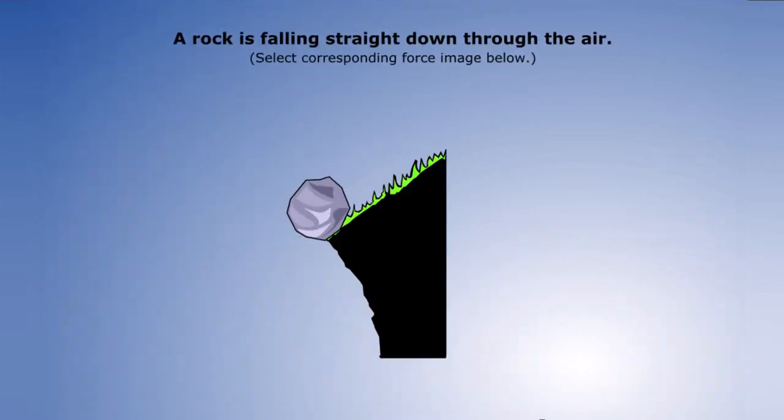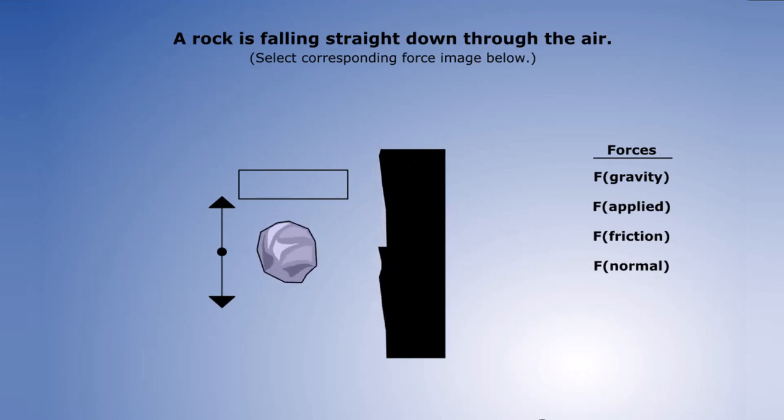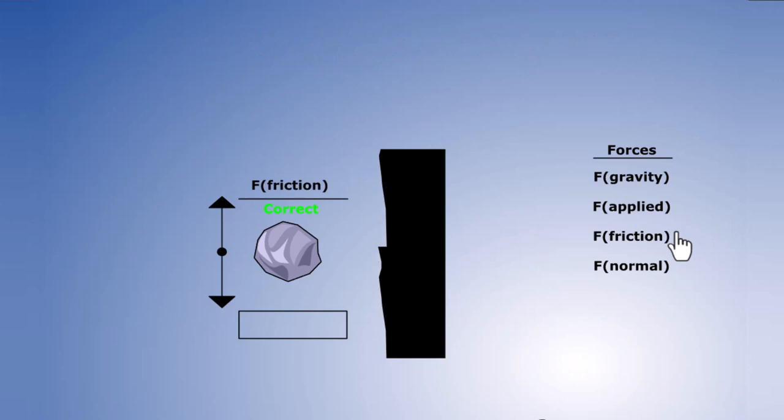A rock is falling straight down through the air. What is the upward force? Friction from the air. And what is the downward force? Gravity.